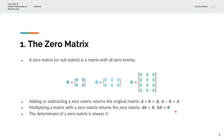The determinant of a zero matrix is always zero. And because the determinant of a zero matrix is always zero, we cannot find the inverse of a zero matrix.